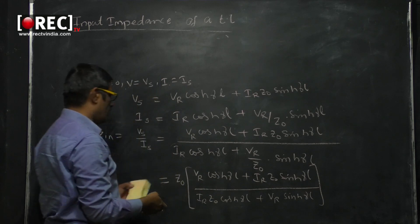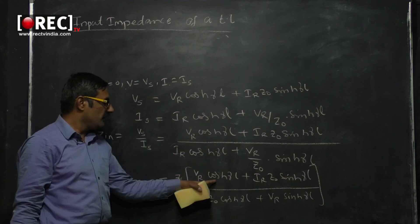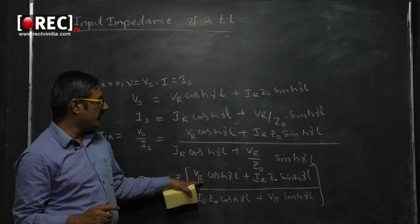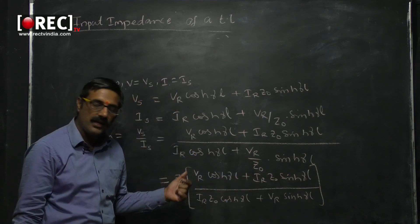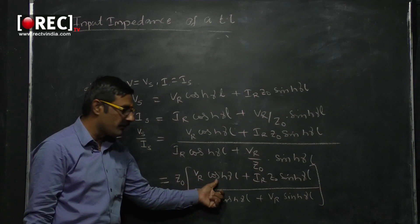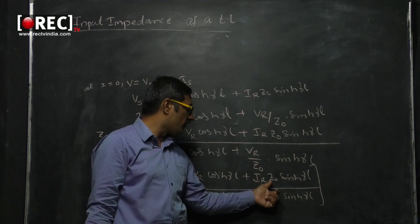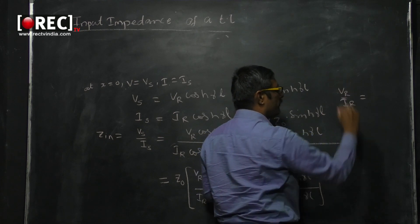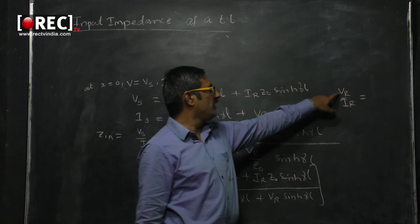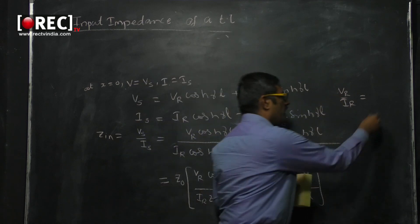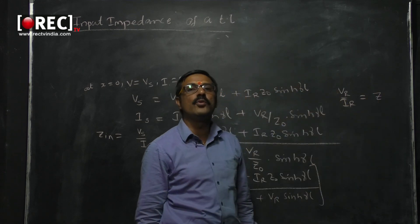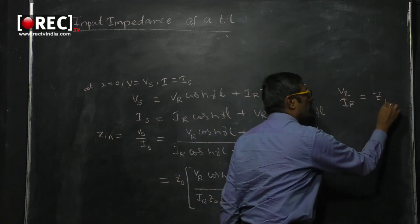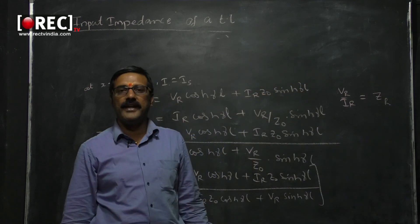Now dividing the numerator and denominator by IR: VR/IR·cosh(γl) plus Z₀·sinh(γl) in the numerator, divided by Z₀·cosh(γl) plus VR/IR·sinh(γl). Since VR/IR is impedance Z at the receiver terminals, I replace VR/IR with ZR, where ZR is the receiver impedance.